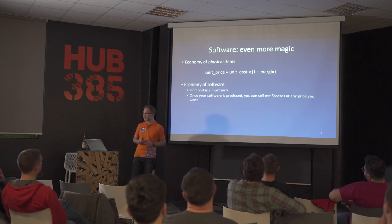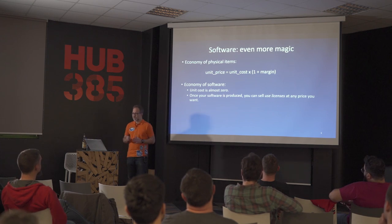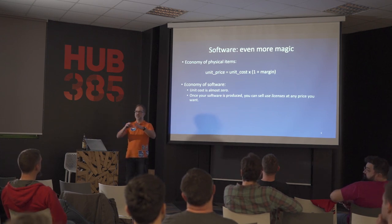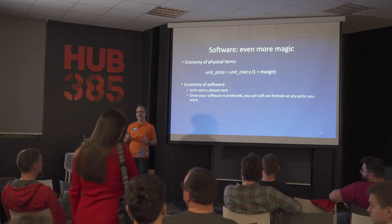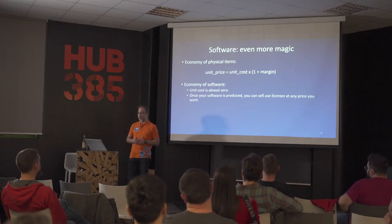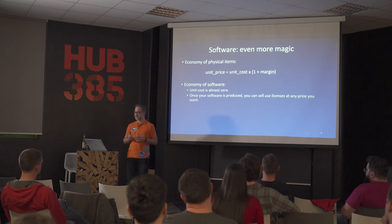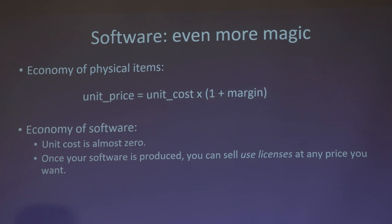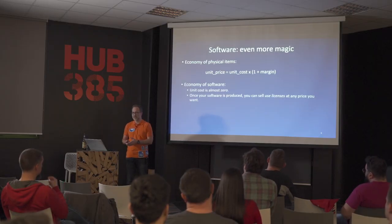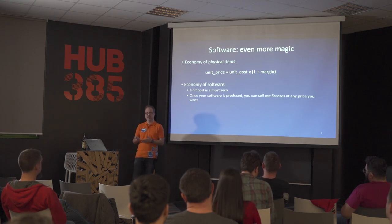What is different with software pricing compared to physical products? With physical products we are limited by unit cost — every item costs some amount to produce, then we add our margin, for example 30%, on top of production costs. However, the economy of software is different because unit cost is almost zero. We don't actually sell software — we sell licenses to use software. The only thing we deliver to the customer is a serial key or activation key, and that costs zero to send.